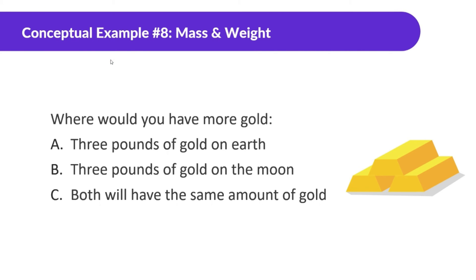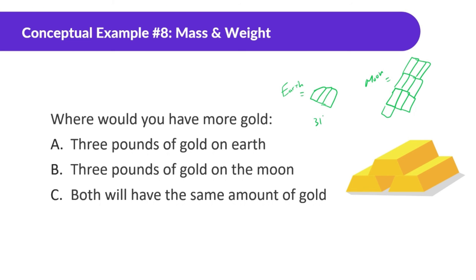Where would you have more gold: three pounds of gold on Earth, or three pounds of gold on the moon? Both will have the same weight — three pounds — but pounds is a measure of weight. If we had three pounds of gold on Earth, let's say each piece weighs one pound. But in order to have three pounds of gold on the moon, you would need a lot more gold for it to equal the same weight, because gravity is weaker. So you'd have more gold — more mass of gold — on the moon.